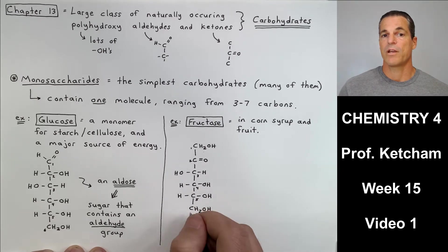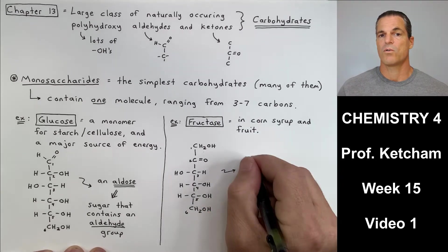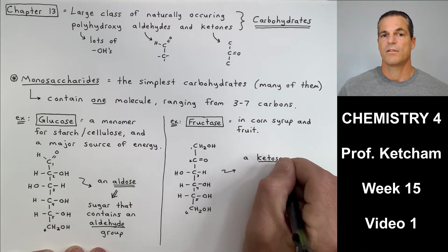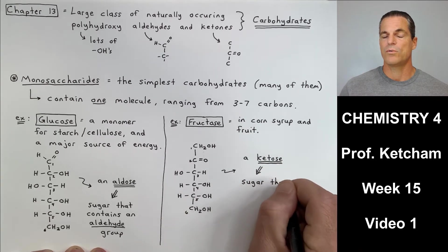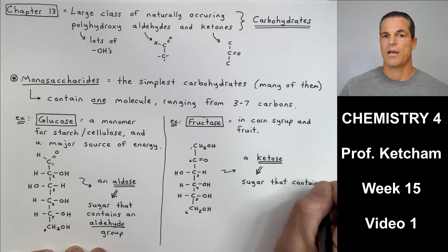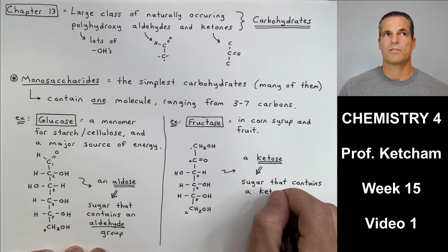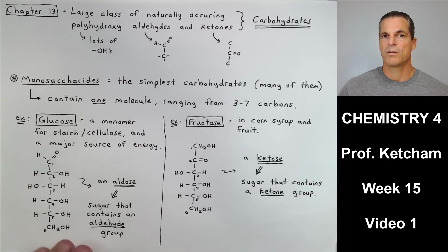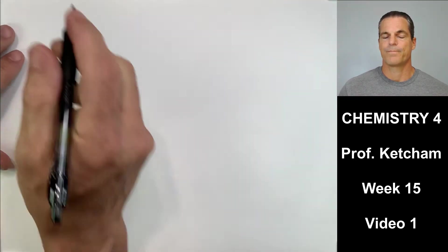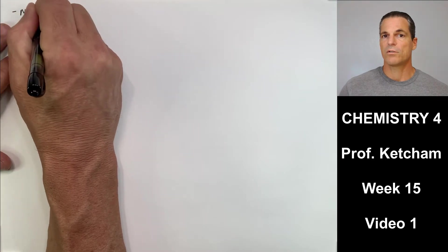On the right-hand side, I'm drawing fructose, which is found in corn syrup and fruit. This is also a monosaccharide. However, if you look at carbon two, that's a ketone right there. So this is not an aldose, like glucose. This is a ketose, which is a sugar that contains a ketone group. So that's glucose and fructose.